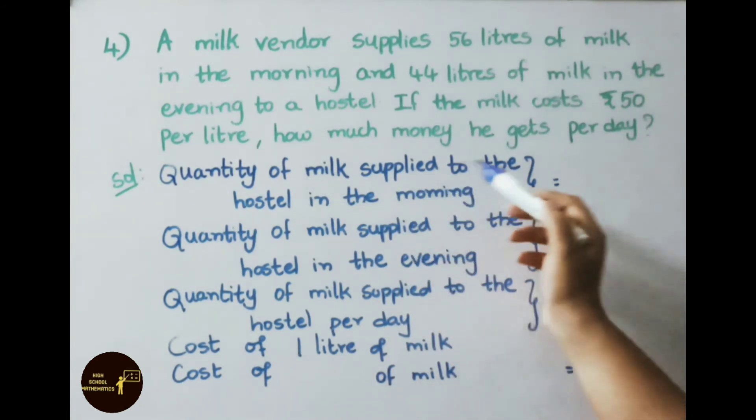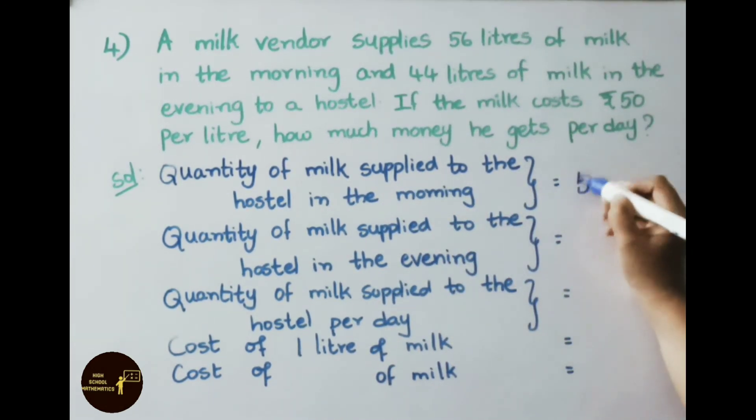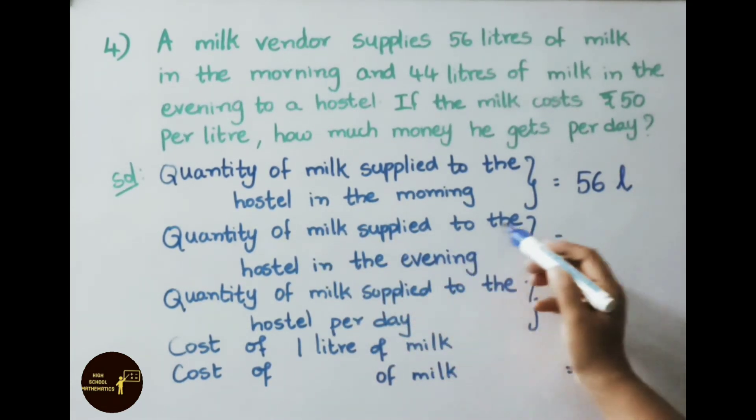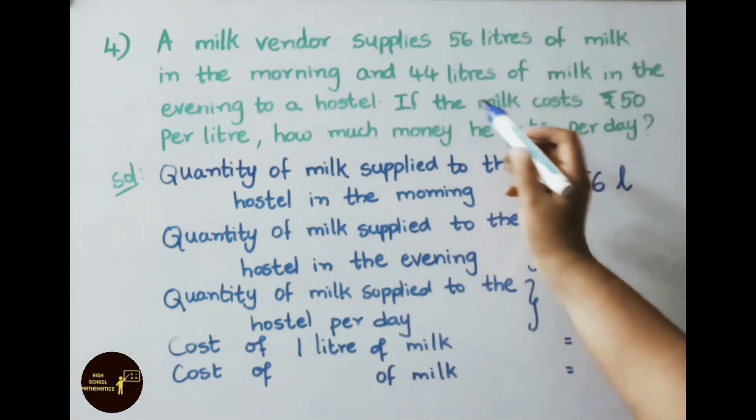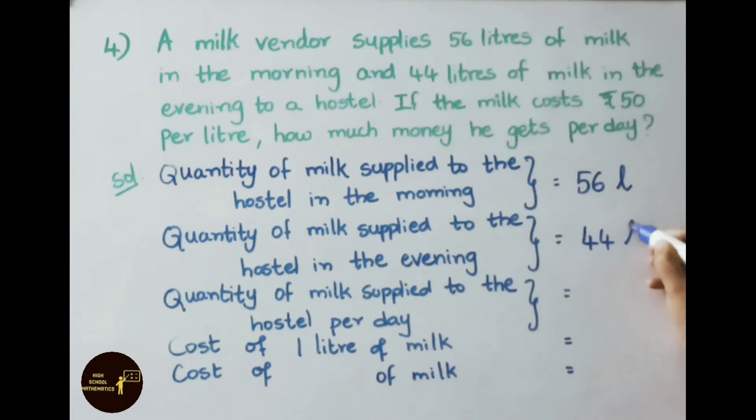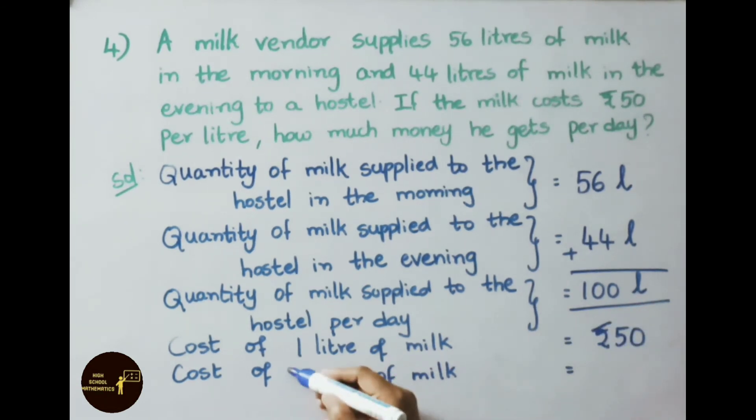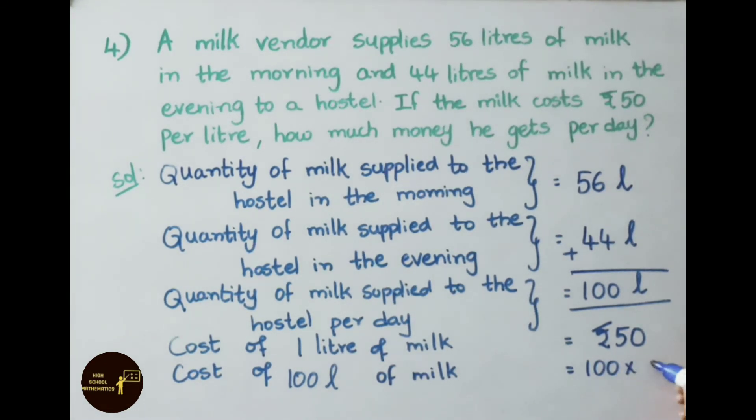Quantity of milk supplied to the hostel in the morning, that is 56 liters. Quantity of milk supplied in the evening, that is 44 liters. Quantity per day, we shall add these two: 56 plus 44, that is 100 liters. Cost of 1 liter is 50 rupees. Cost of 100 liters equals 100 into 50, that equals 5000 rupees.